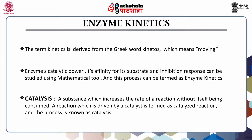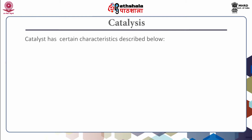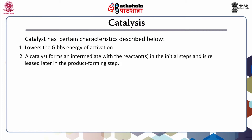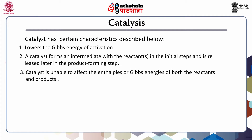A catalyst has certain characteristics: first, it lowers the Gibbs energy of activation; second, a catalyst forms an intermediate with the reactants in the initial steps and is released later in the product-forming step; third, the catalyst is unable to affect the enthalpies or Gibbs free energies of both the reactants and products.